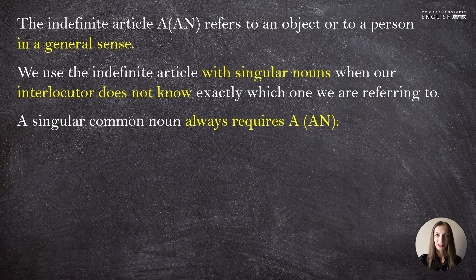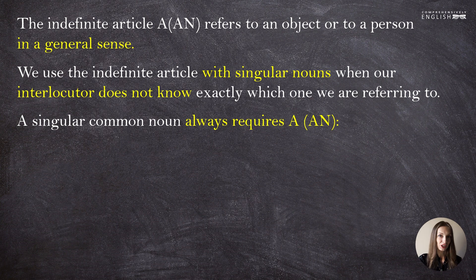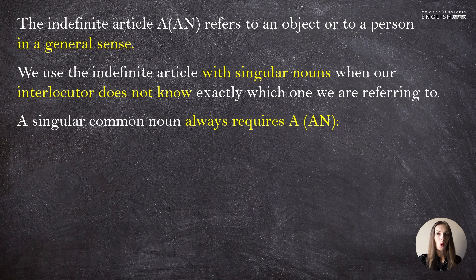This is an important thing to remember. Once again, a singular common noun always requires 'a' or 'an'. There won't be any situation in English where you have a countable singular common noun without any article. That will be either 'a' or 'the,' or something that takes the place of this article.